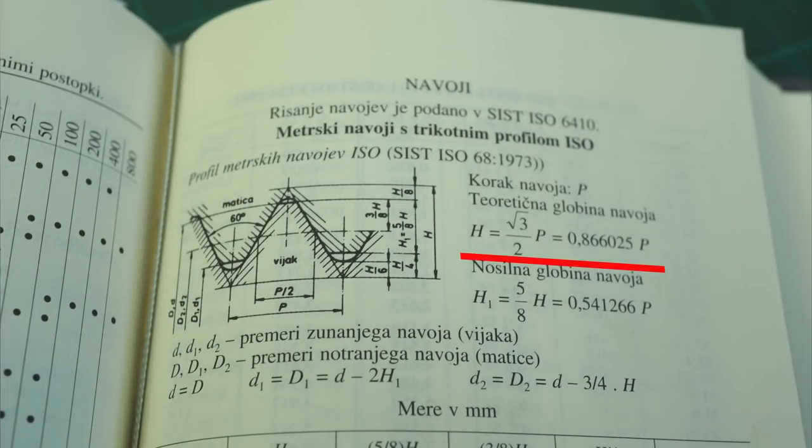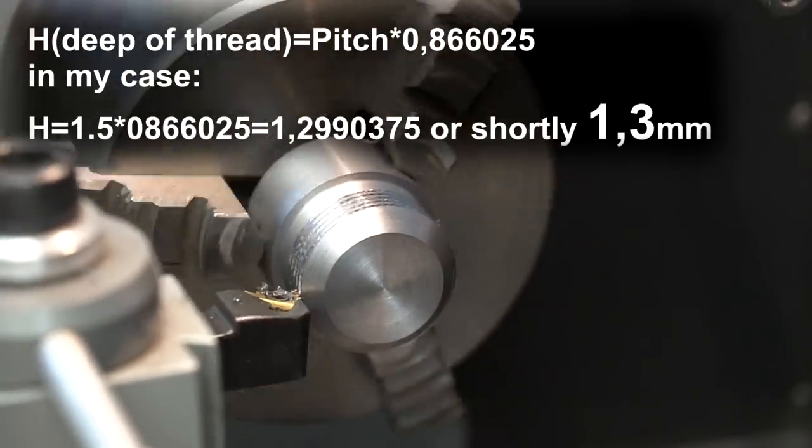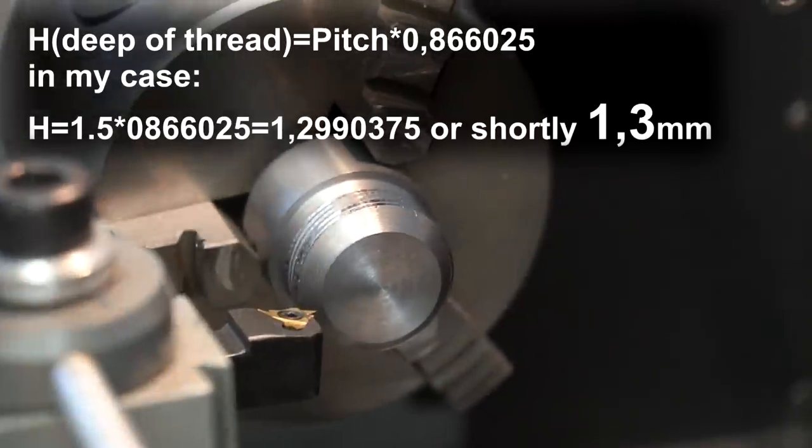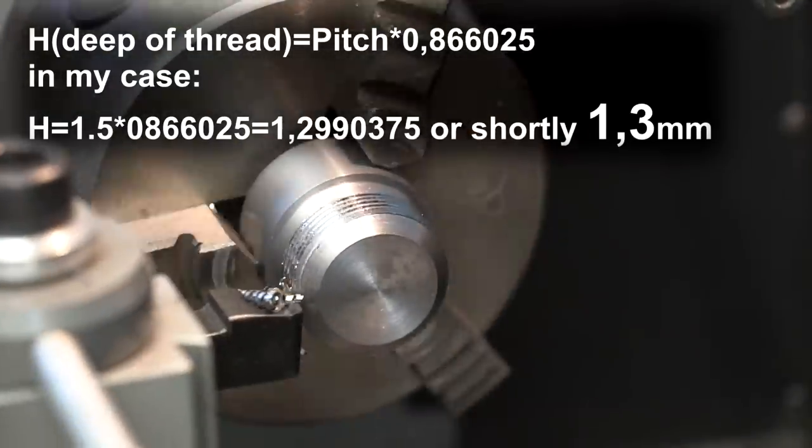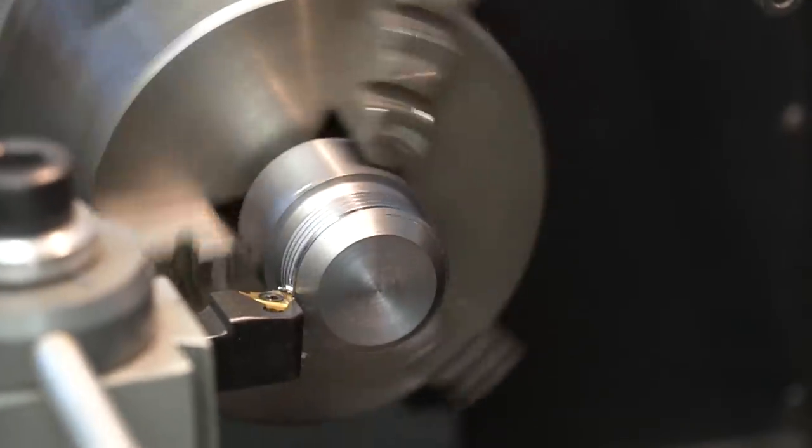That number we get by this formula. We need to get the number of h, which is how deep the thread is. That number we get from pitch multiplied by the number 0.866025. So if I've got pitch 1.5mm in my case, multiply by the number and get the result 1.2990375, or shortly 1.3mm.